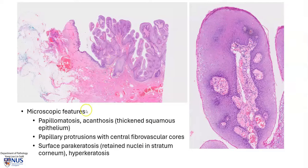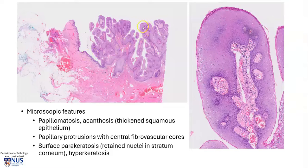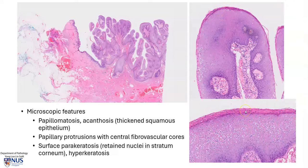Microscopically, there is papillomatosis and acanthosis, meaning the squamous epithelium is thicker than normal. If you compare the squamous epithelium in the lesion with the normal epidermis, you will see it's much thicker in the lesional tissue. These papillary protrusions will have central fibrovascular cores, and there may be surface parakeratosis. Sometimes there is also hyperkeratosis, meaning the keratinized layer is thickened, but we do not see retained nuclei.